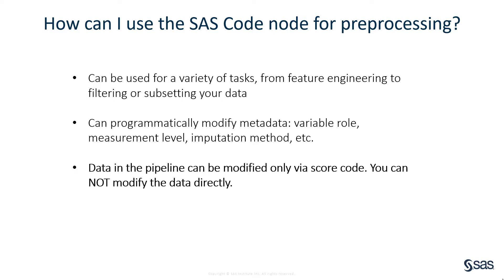If you're familiar with using the SAS Code node in SAS Enterprise Miner, you need to know about an important difference. Unlike the way Enterprise Miner works, a copy of the data isn't stored for each node in order to reduce the space needed. This means you cannot modify the training data directly by changing values of a variable or deleting observations. The data in your pipeline can only be modified by creating new variables via scoring code. Later I will show an example of how you do that.